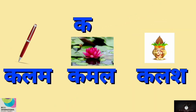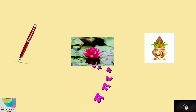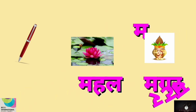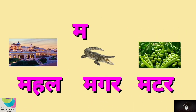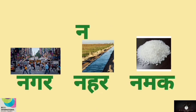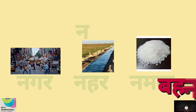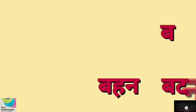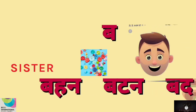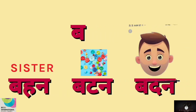Ka — Kalam, Kamal, Kalash. Ma — Mahal, Magar, Matar. Na — Nagar, Nahar, Namak. Ba — Bahan, Battan, Badan.